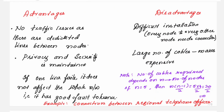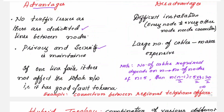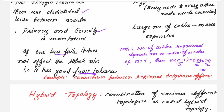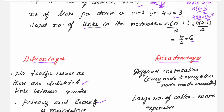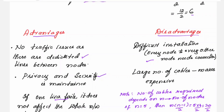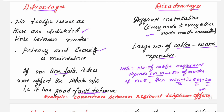The advantages of mesh topology are: no traffic issues because there are dedicated links between nodes, security is maintained because the message does not go through different intermediate PCs, and if one link fails it does not affect the whole network — it has good fault tolerance. The disadvantages are: difficult installation because every node needs a connection to every other node, and the number of cables is large which increases cost. For n = 5, you need 10 cables in duplex and 20 cables in simplex.